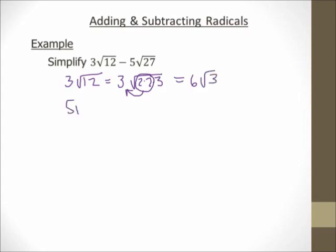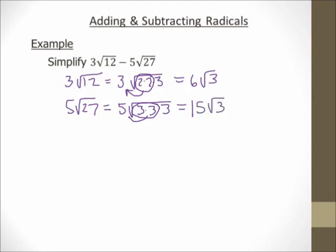Let's do 5 square root of 27. I'm going to end up with 5 times the square root of 3 times 3 times 3. My index is a 2, so I circle a group of two 3s and bring one out. So I end up with 5 times 3, which is 15 square root of 3. So for the next step, I'm going to take 6 square root of 3 minus 15 square root of 3.